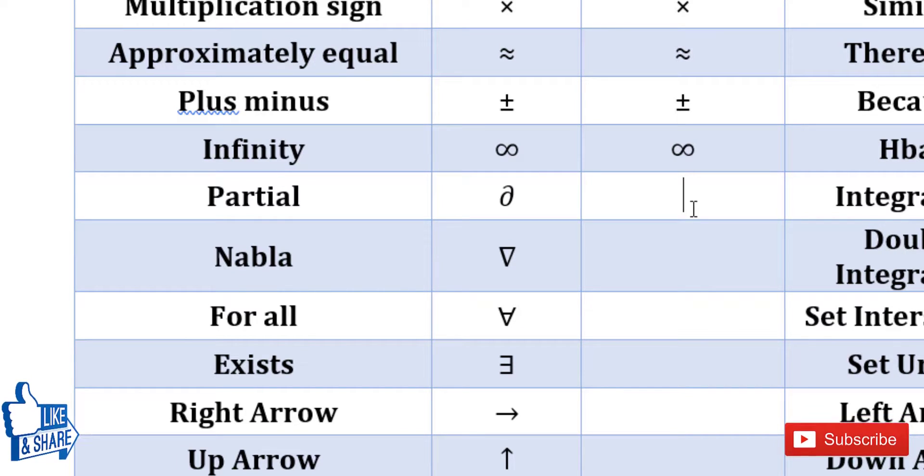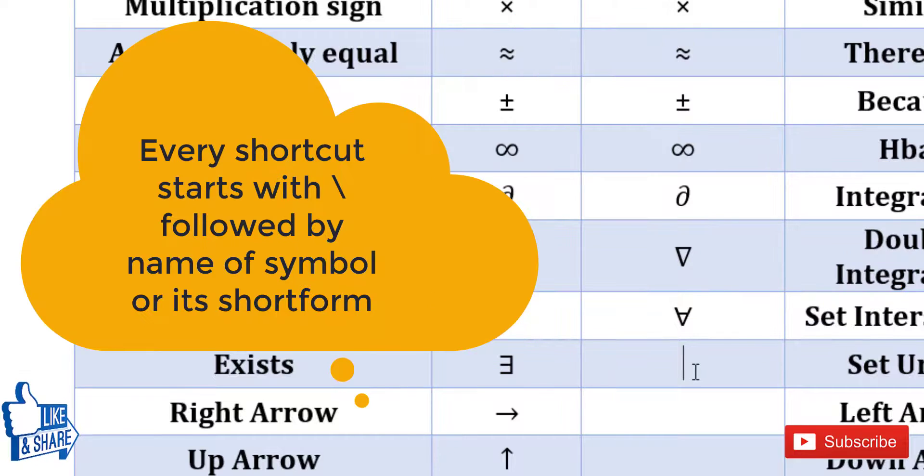I'm just showing the shortcuts for commonly used mathematical operators. If you're typing partial differential equations, then you need the partial symbol—that is backslash partial and then space. This is also a mathematical operator, nabla—backslash nabla and space. And for all is forall. Most of the shortcuts are similar to the name.